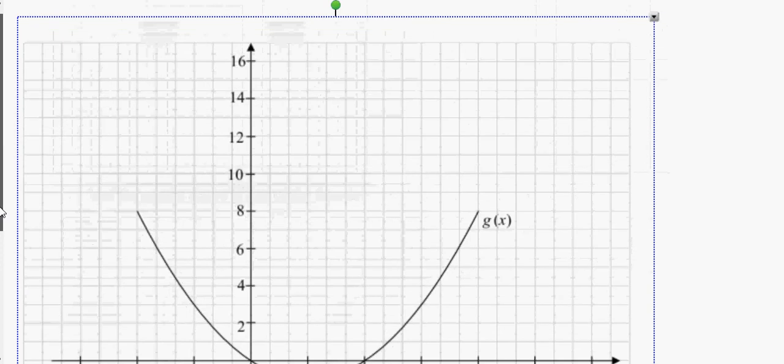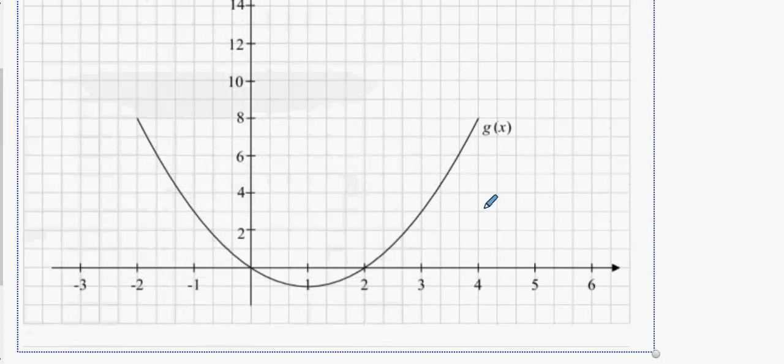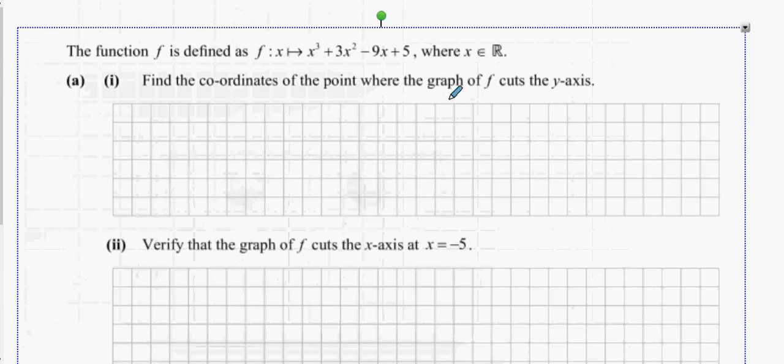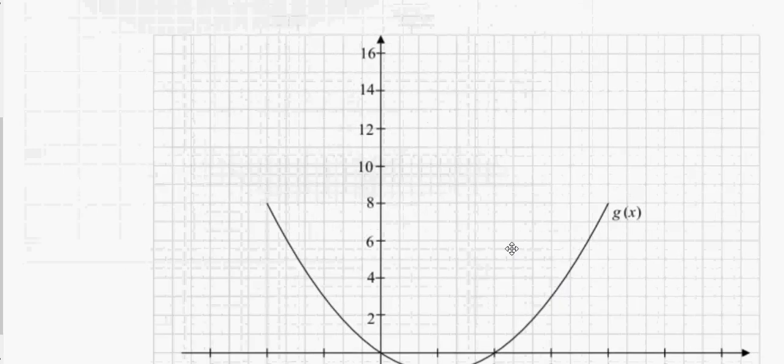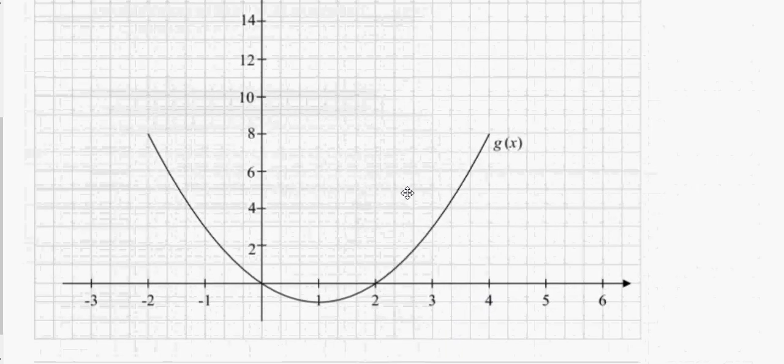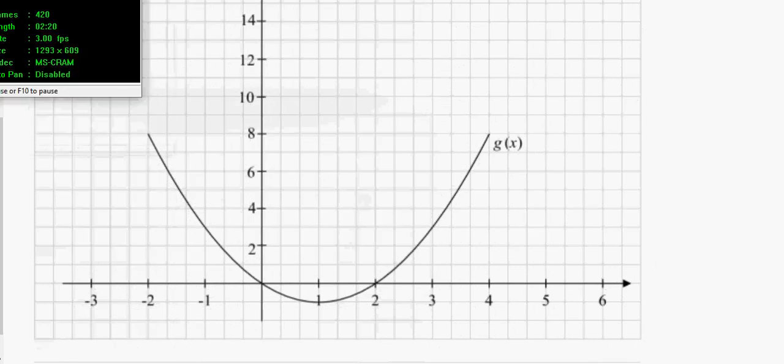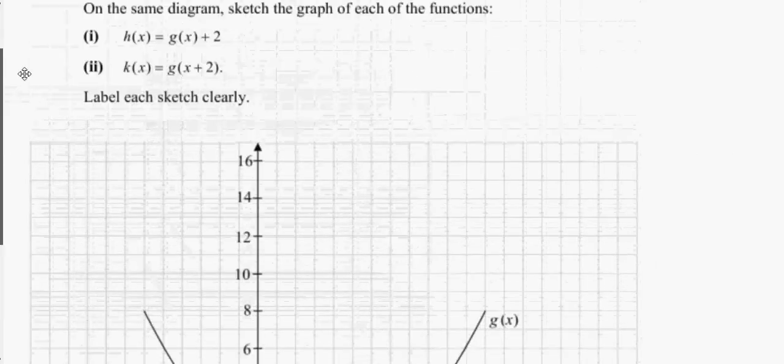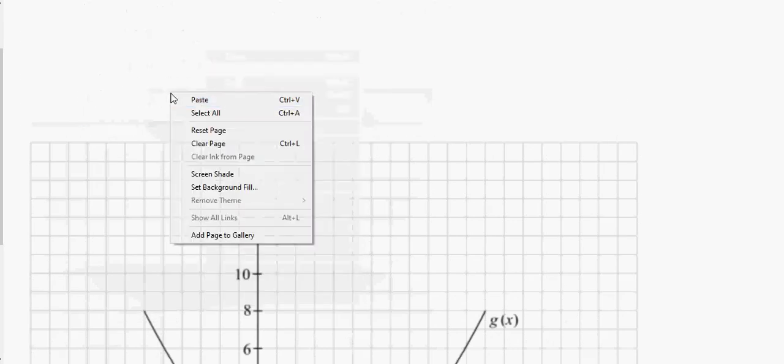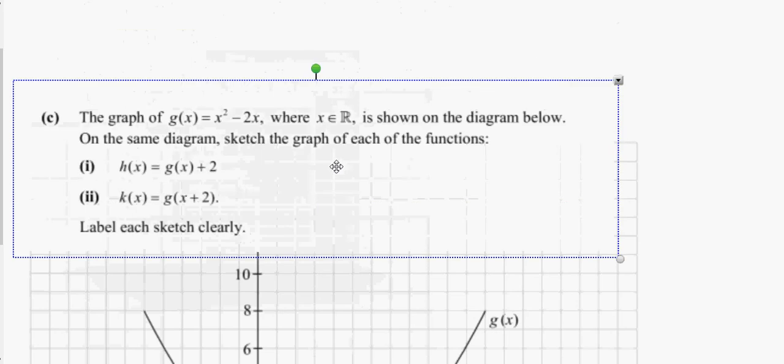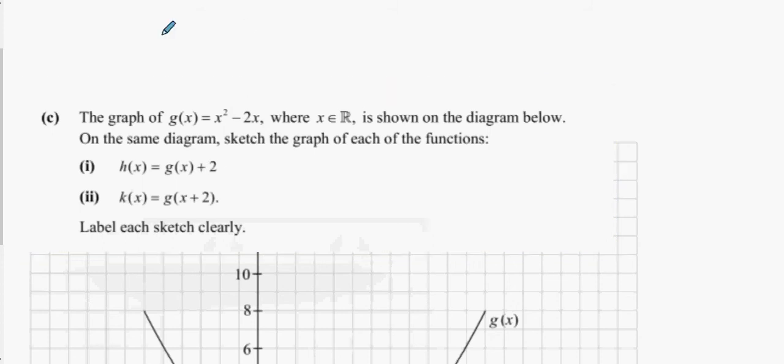Next question. Here is a function G of X. Everybody have it. It's a standard U-shaped function. And then it asks us on the next, I think it's down here, is it? What does it ask us next? What is G of X plus one, is it? So, here's our graph here. And what it wants us to do is it wants us to label two new graphs.